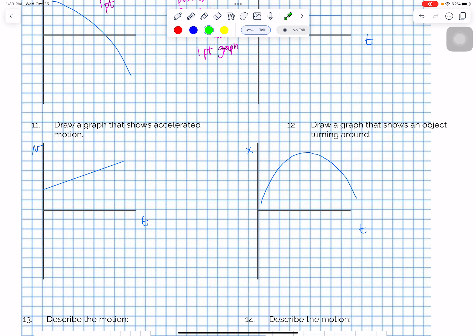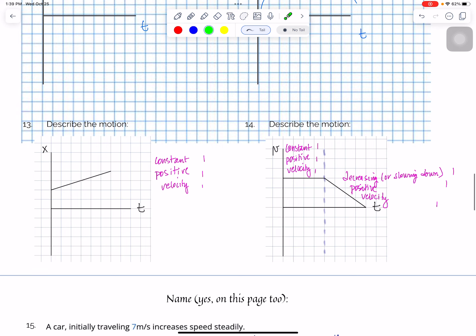And then drawing a graph that shows an object that's turning around. Several of you tried to bluff your way through this by drawing crazy graphs. And I mostly did not accept those. But for a position versus time, you need to show either a hill or a valley because that shows turning around.